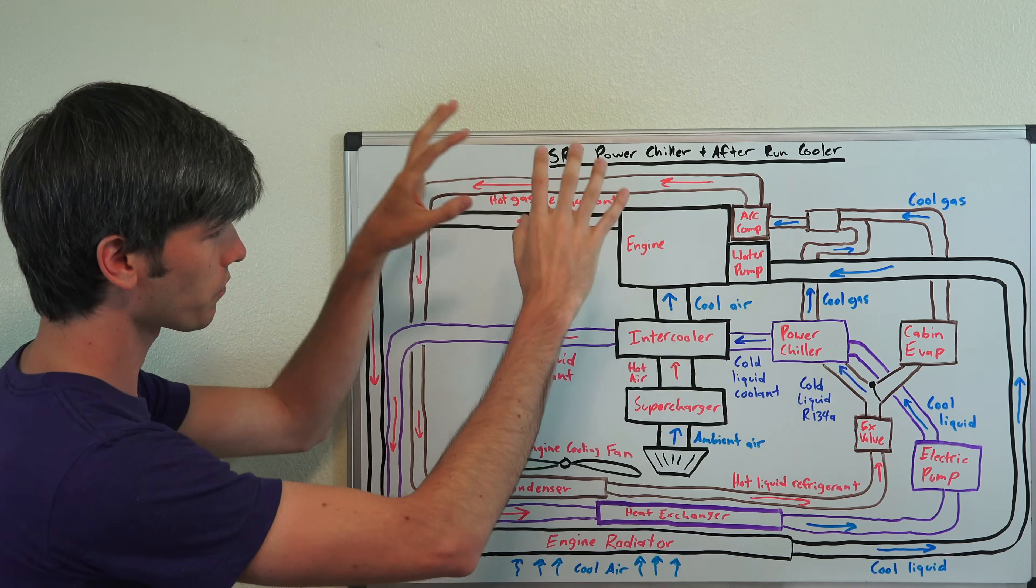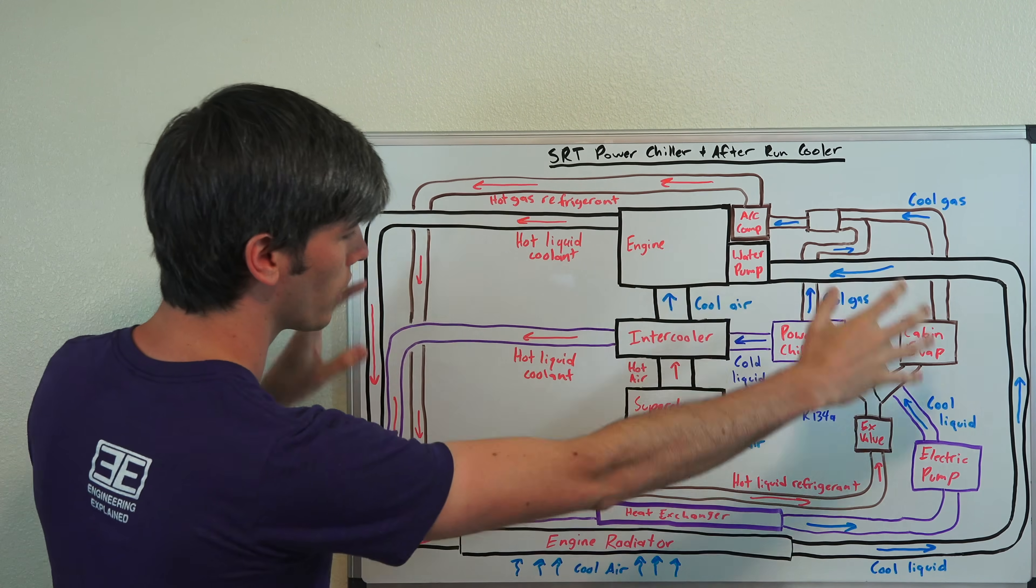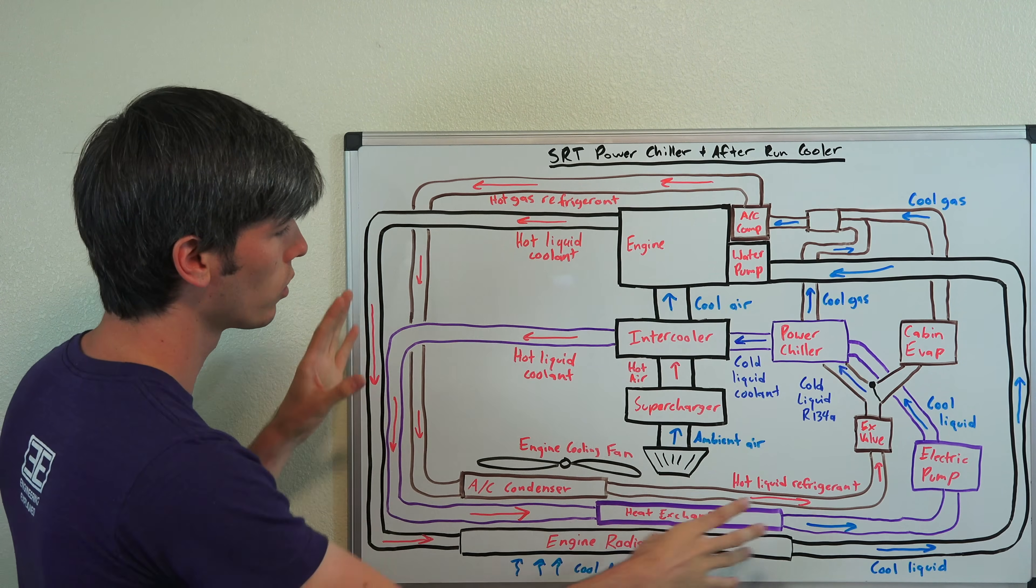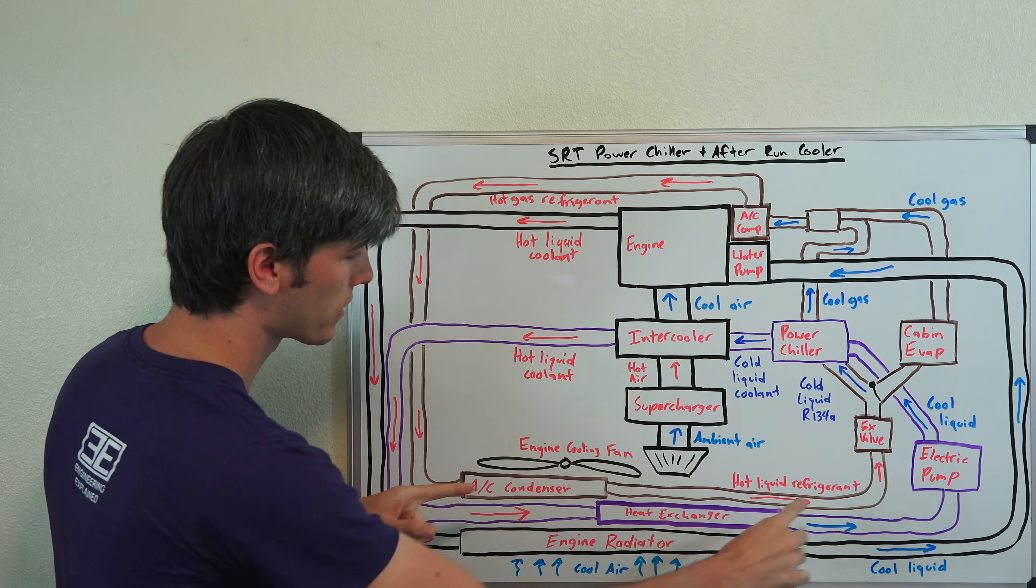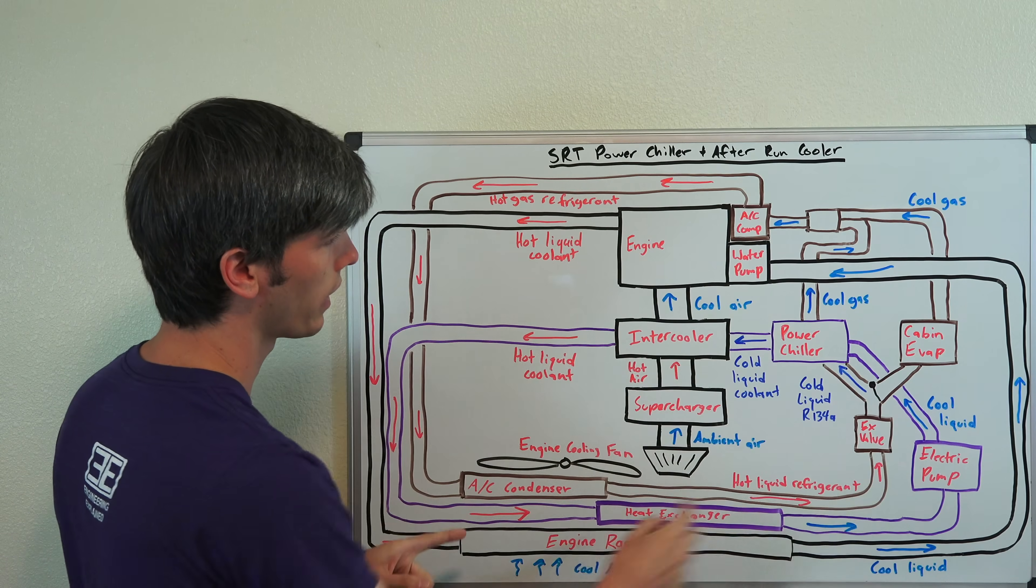Looking at it, the three systems: we've got the engine in black, so that's the engine cooling with the black circuit here. We've got the intercooler, which is in purple. That's got a cooling system, all of that in purple.